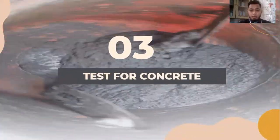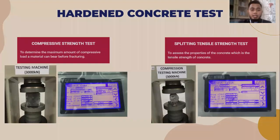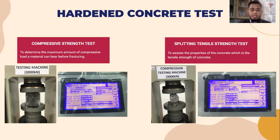For the fresh concrete test, I conducted the slump test, which is the basic method for evaluating concrete workability, followed by the compacting factor test to determine the properties and workability of fresh concrete. Then I proceeded with the compressive strength test and the splitting tensile strength test. The pictures shown are from the lab at UIA. The compressive strength test determines the maximum compressive load a material can bear before fracturing, and the splitting tensile strength test assesses the tensile strength property of concrete.